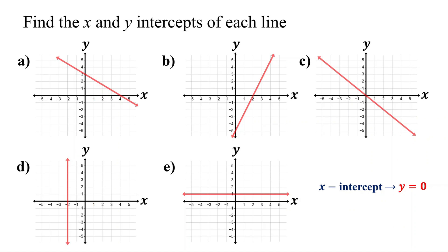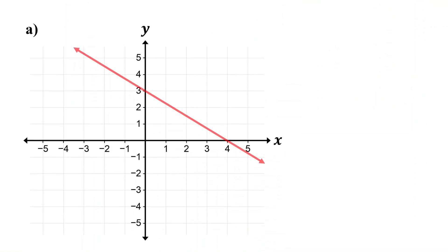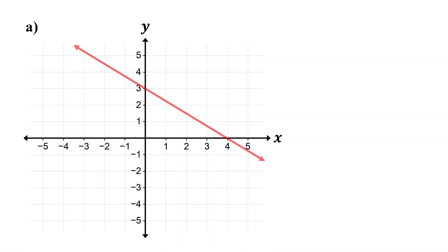The point where a line crosses the y-axis is called the y-intercept. At this point, the x-coordinate is 0. To find the x-intercept, first locate where the line crosses the x-axis, then identify the coordinates of this point.